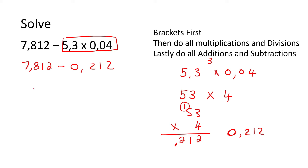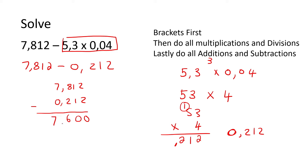Now we know how to add and subtract decimals — we just put the decimals on top of each other. So seven comma eight one two minus zero comma two one two. Two minus two is zero, one minus one is zero, eight minus two is six, seven minus zero is seven. So the answer is seven comma six zero zero. But zeros at the end after the decimal can be ignored, so we actually have an answer of seven comma six.